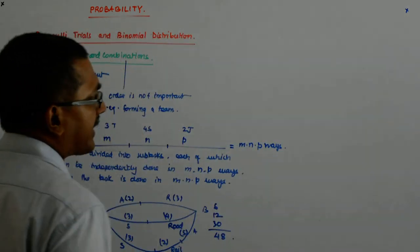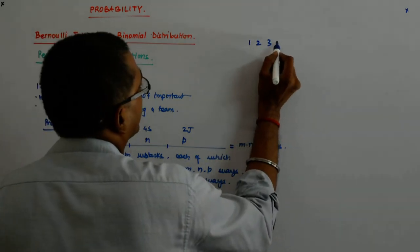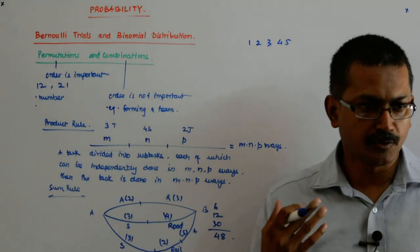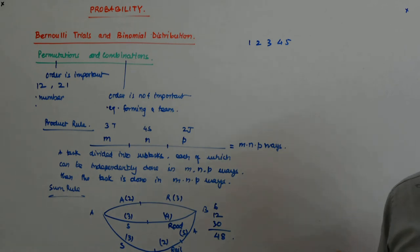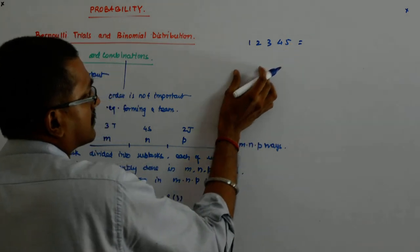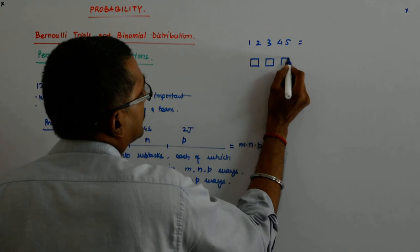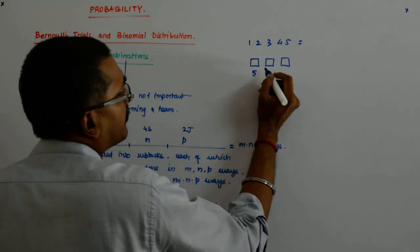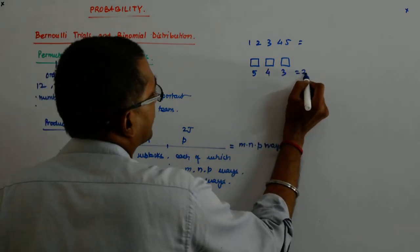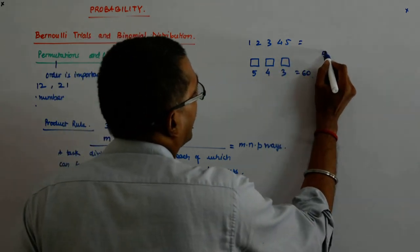Now you can directly apply the formula. For example, I have got 5 digits: 1, 2, 3, 4, 5. And I have to take 3 out of them and I am supposed to find a number. I am supposed to find a number. So that can be done in, see, I have to form a 3-digit number with it. They can be done in how many ways? I can take any of the 5 here, if repetition is not allowed. Any 5 here, 4 here, and 3. So that is 60.